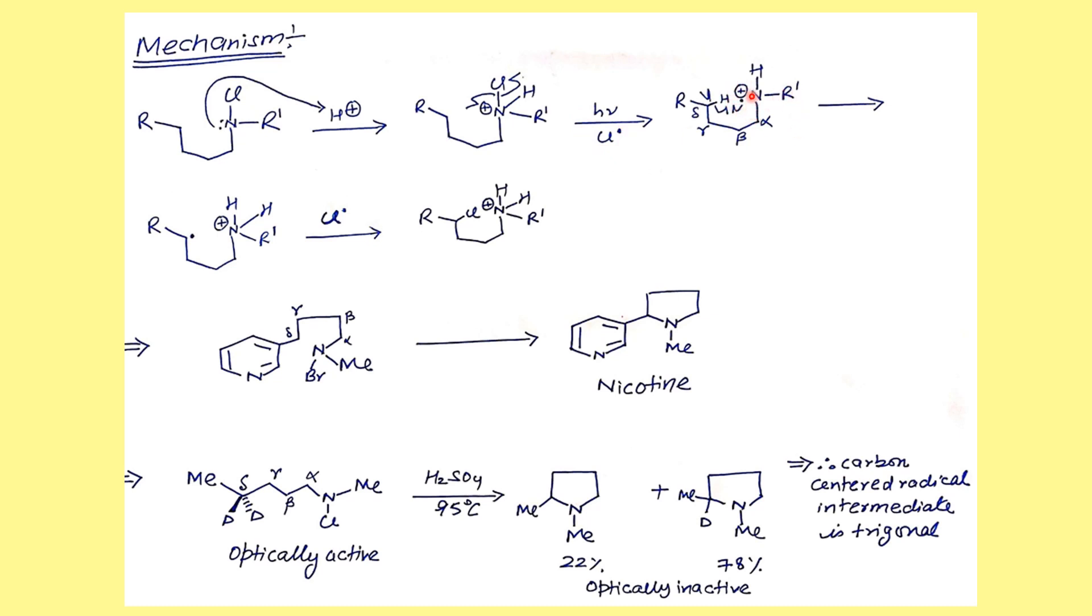There is removal of chloride ion. What you form is this radical cation. Now there is a six-membered transition state that forms: alpha, beta, gamma, delta. Then there is abstraction of proton by this radical. Remember this is a six-membered transition state counting one, two, three, four, five, six.